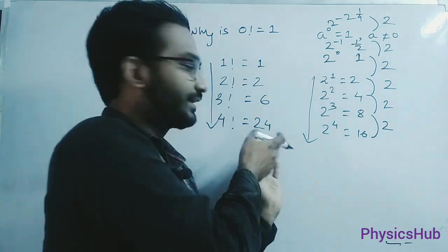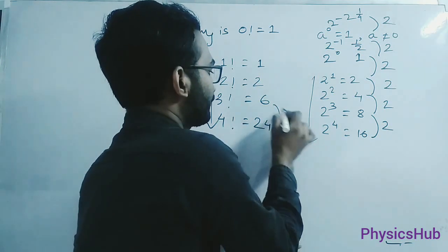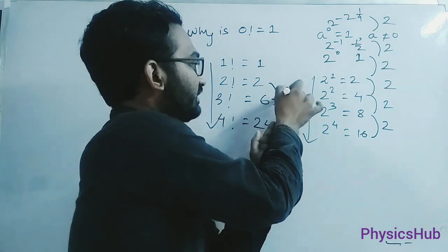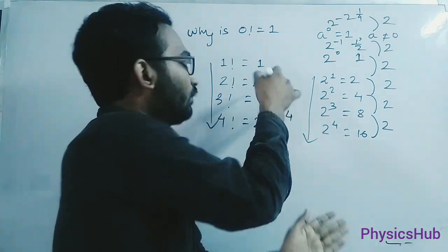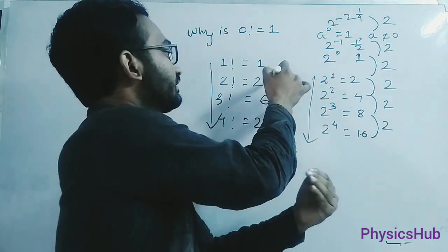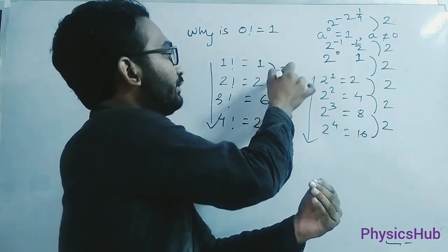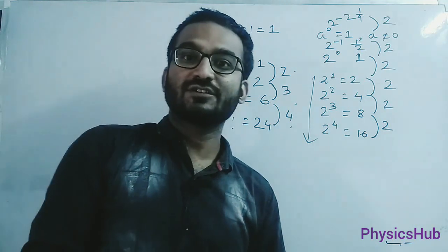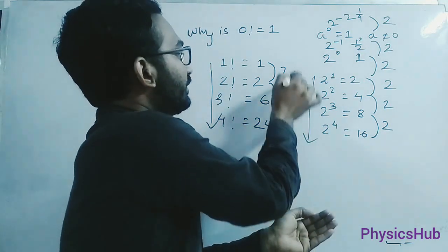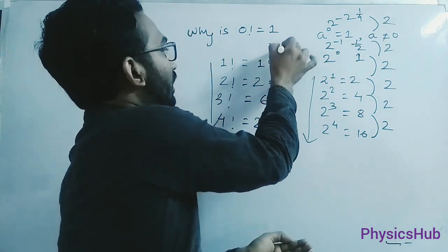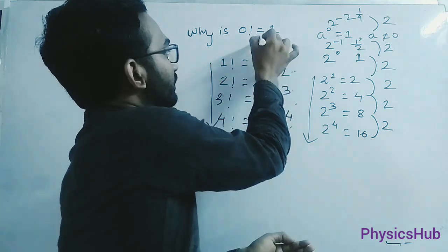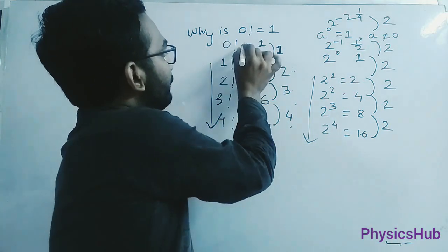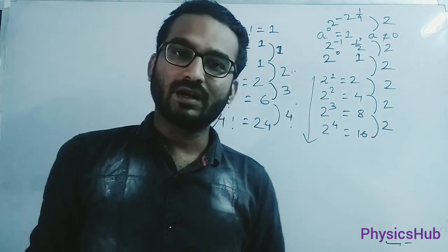Now just look into it. 24 by 6, what is the result? 4. 6 by 2, what is the result? 3. So what are we expecting in the next division? 2 by 1 is 2. We have 4, 3, 2. Then the next division should give me 4, 3, 2, 1. So how can it produce 1? If it is 1, and in this way, 0 factorial equals to 1.